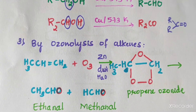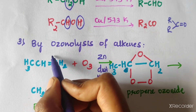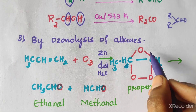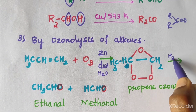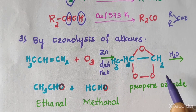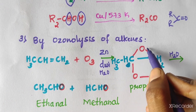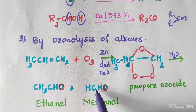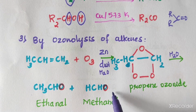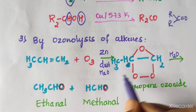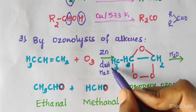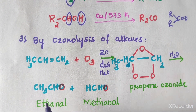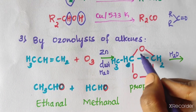In ozonolysis, oxygen from ozone is added across the double bond, breaking it. One oxygen adds to each carbon of the double bond. Using zinc dust and water (hydrolysis), the ozonide is cleaved. For example, from an alkene we can obtain CH3CHO (ethanal/acetaldehyde).